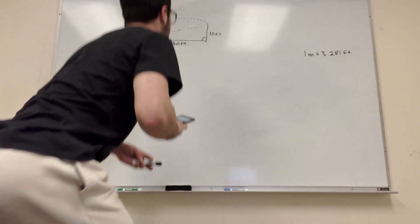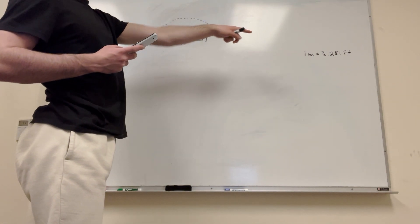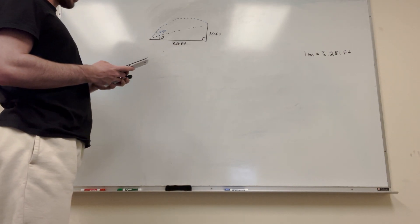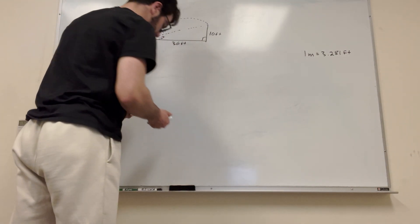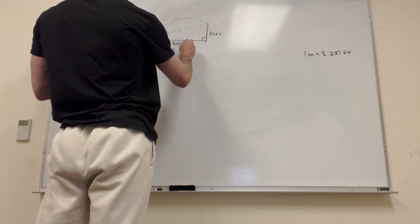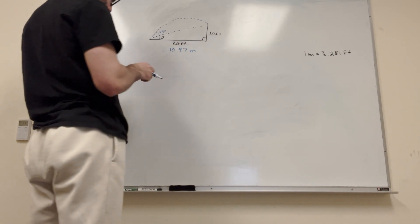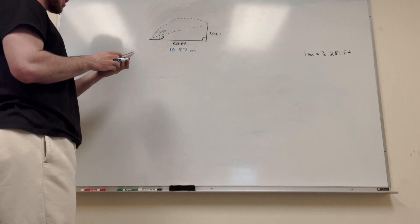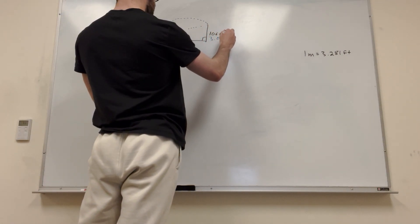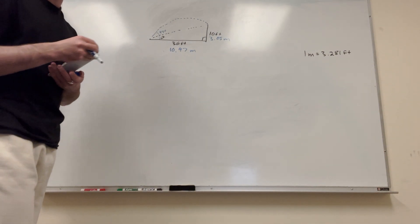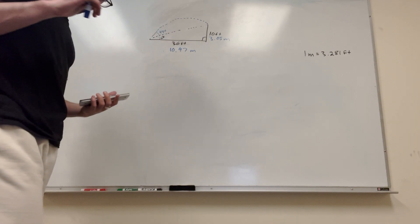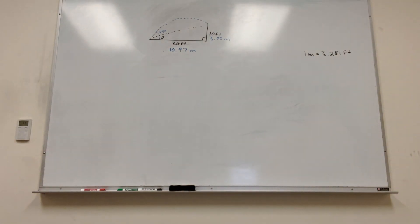But it also wants meters per second. So let's go ahead and convert to meters per second. So all we have to do is divide 36 by 3.281 because 1 meter is 3.281 feet. So 36 divided by 3.281 gives us 10.97 meters. Same thing for the 10. 10 divided by 3.281, that's 3.05 meters. Rounding to a couple decimal places, just whatever is reasonable for this.